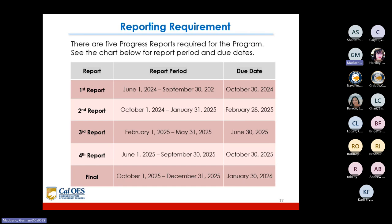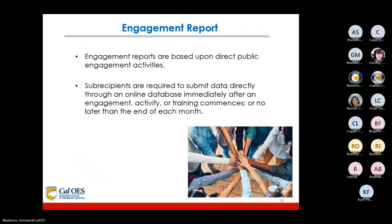There are five progress reports required for the program — you can see the chart with final report period dates. Engagement reports are based upon direct public engagement activity. Sub-recipients are required to submit data directly through an online database immediately after an engagement activity or training commences, or no later than the end of each month.